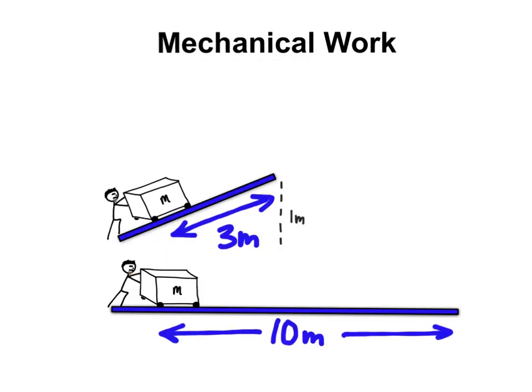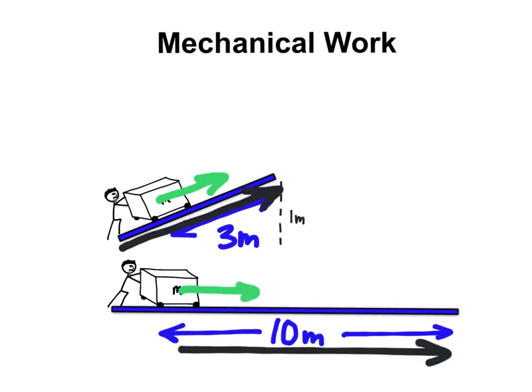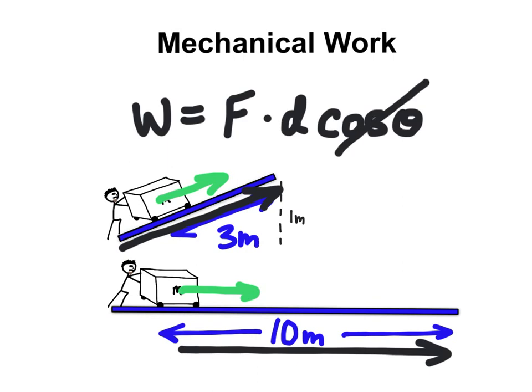In this particular case the direction of the applied force is the same direction as the displacement. So the cosine theta term becomes 1 because the angle between the force and displacement is 0, cosine of 0 is 1.